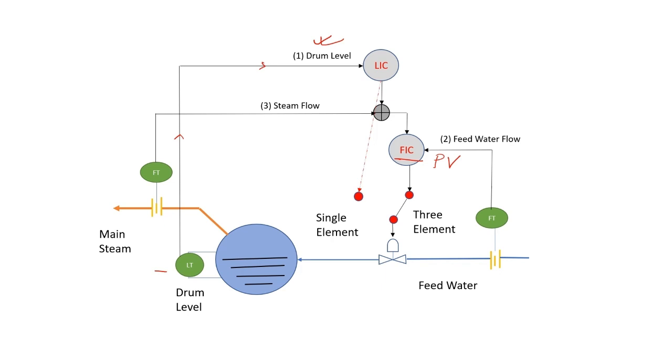Output of this level controller becomes the set point of the flow controller. This becomes the master and this flow controller becomes slave, so this is a master-slave cascade control scheme.